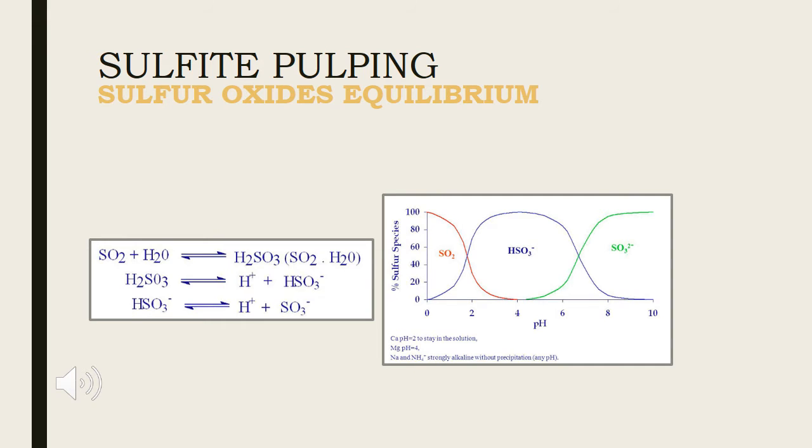Sulfur oxide equilibrium in sulfite pulping is presented in diagram along with reactions. As the diagram shows, sulfur dioxide exists in neutral form till pH less than 2. From 2 to 7, sulfur exists in the form of bisulfite. From pH 7 onward up till 10, sulfur exists in the form of sulfate.